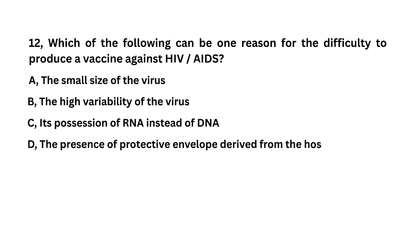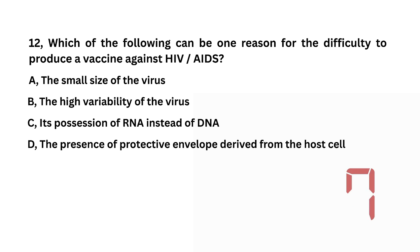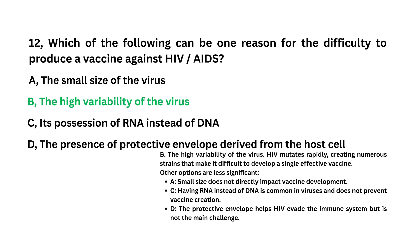Which of the following can be one reason for the difficulty in producing a vaccine against HIV-AIDS? The small size of the virus; the high variability of the virus; expression of RNA and state of DNA; the presence of a protective envelope derived from the host cell. The high variability of the virus is the answer.